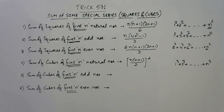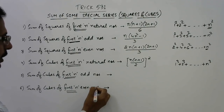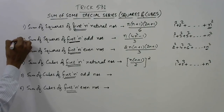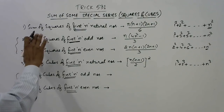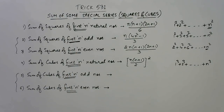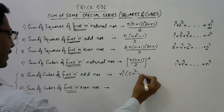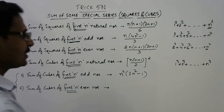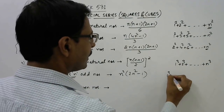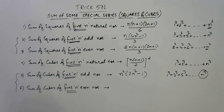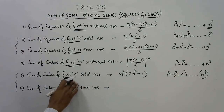Similarly, the sum of cubes of first n odd natural numbers and sum of cubes of first n even natural numbers are very important — these are the four things which trouble us in exams and we don't have shortcuts for. For the sum of cubes of first n odd natural numbers — 1³ + 3³ + 5³ up to n³ — the formula is n²(2n²−1). Just put the value of n; for example, for the first 20 odd numbers put n equal to 20.